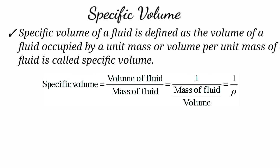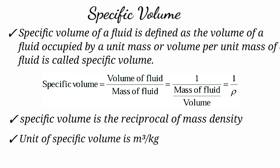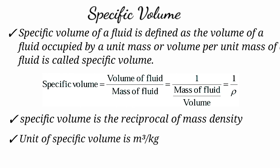Specific volume is the volume occupied by a unit mass. Specific volume = 1/ρ. So specific volume is the reciprocal of mass density. Since mass density has units of kg per meter cube, specific volume has units of meter cube per kg.